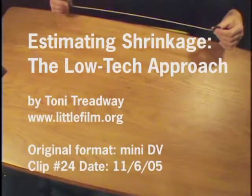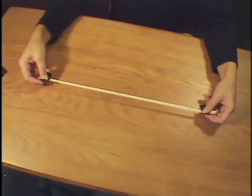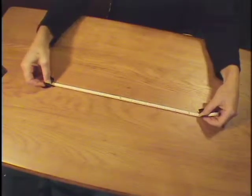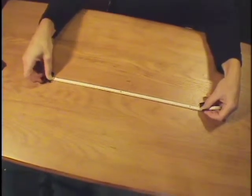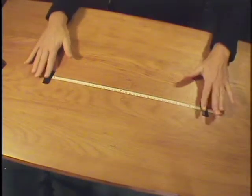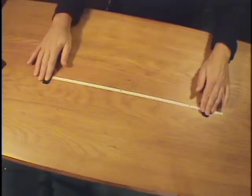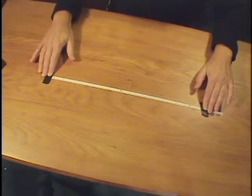Here's a way to easily determine the amount of shrinkage of a film you suspect is shrunken. I've made a little chart on a piece of new leader that I bought from Kodak. This is 8mm white leader from Kodak that I assume to be dimensionally correct because it is new.